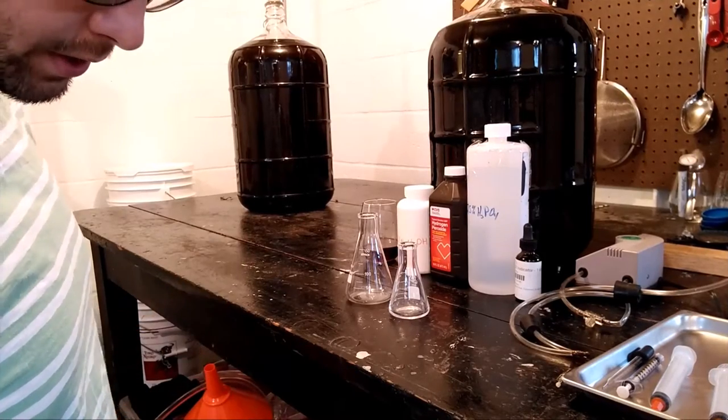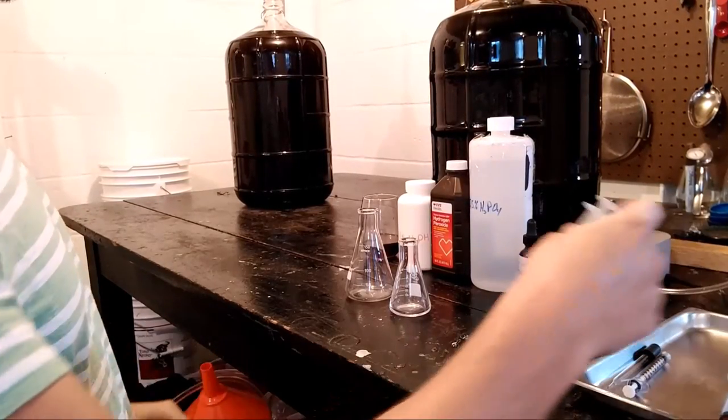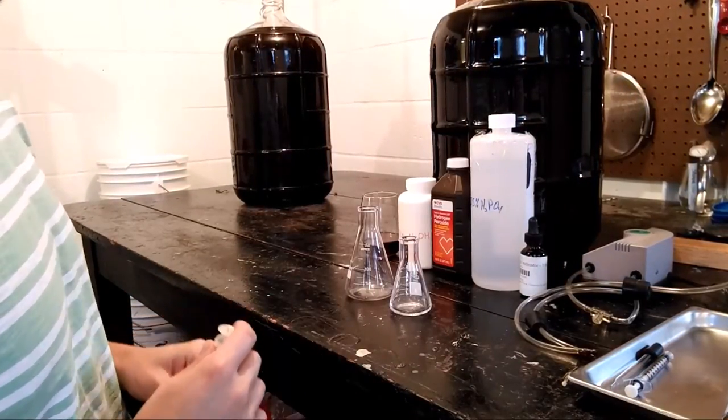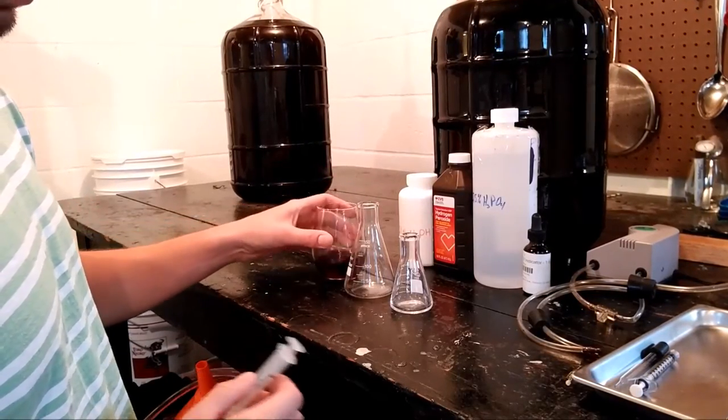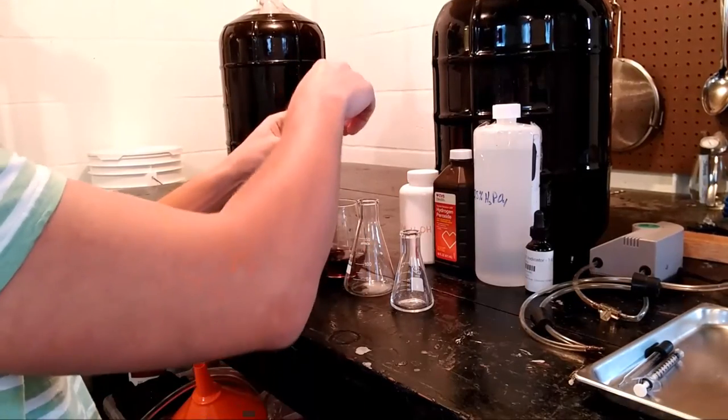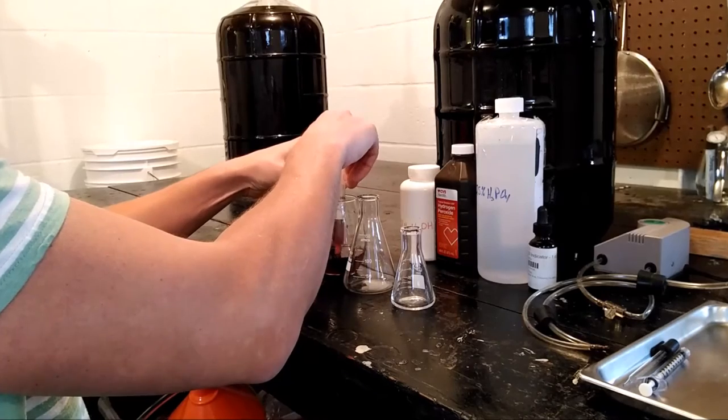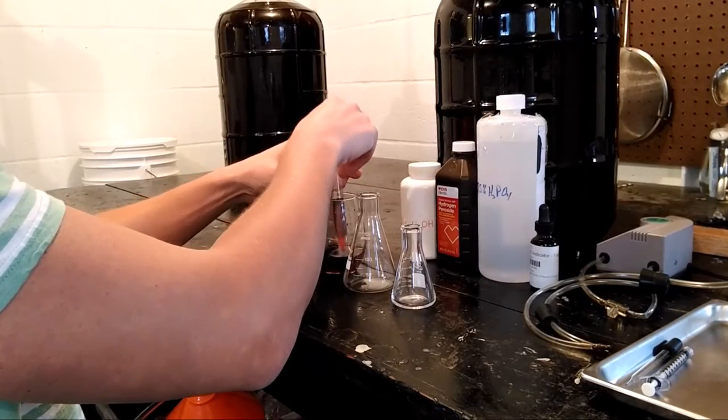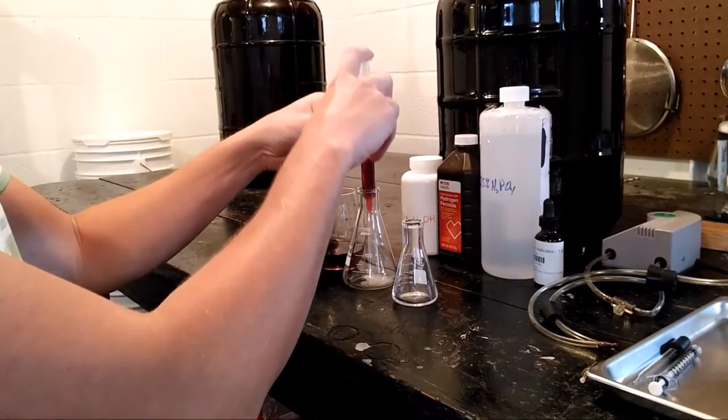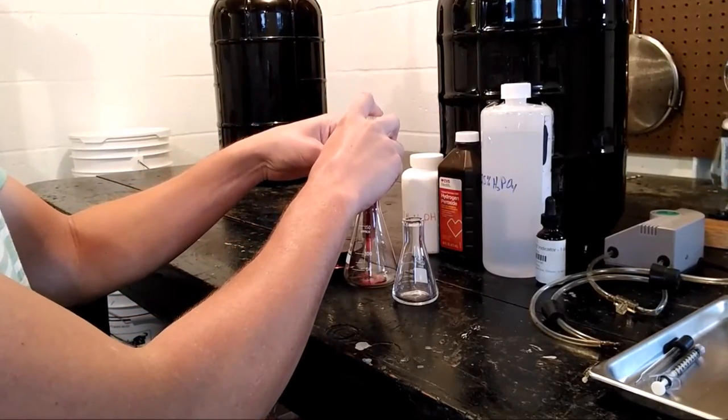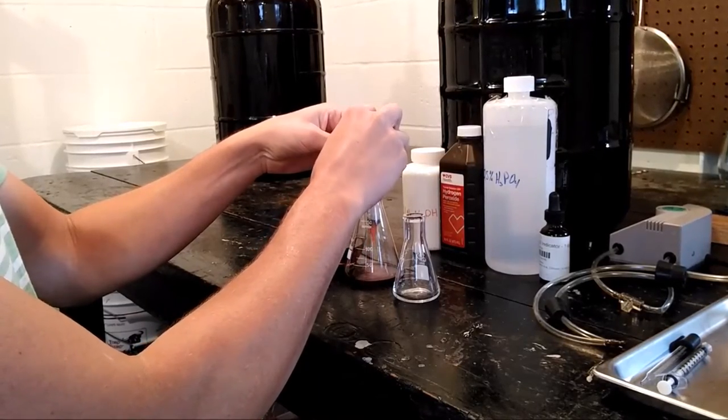What you're going to do is take 20 milliliters of the wine that you want to test and add it to the larger of the two flasks. I've got a syringe here that I've marked wine so I don't mix it up. It's a 10 milliliter syringe, so I'll have to do two squirts here. I'm going to try not to splash it up too bad because I don't want to blow off any of those sulfites.